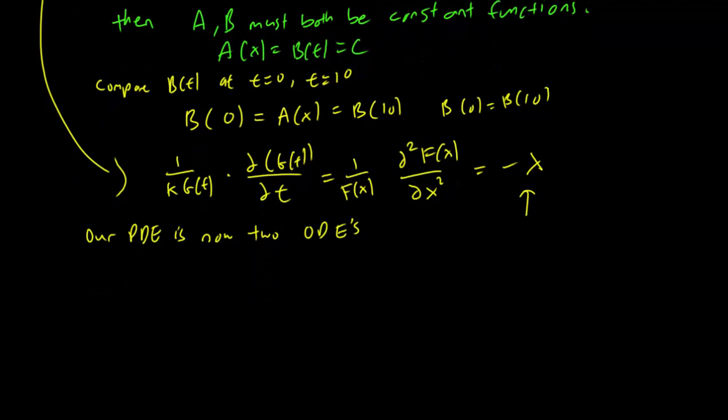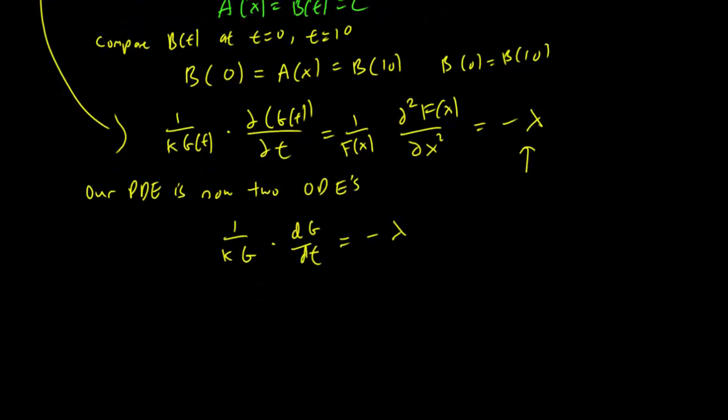The first ODE is 1/(kG) dG/dt equal minus lambda. And our second ODE is 1/F times d²F/dx² equals minus lambda.